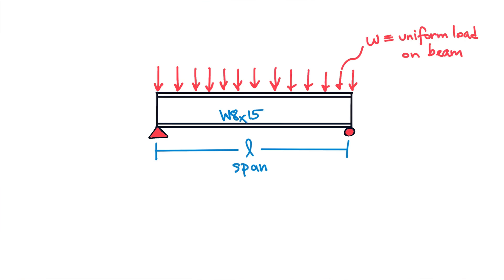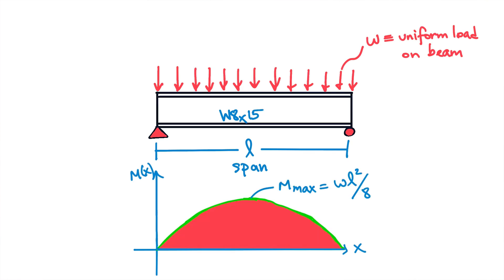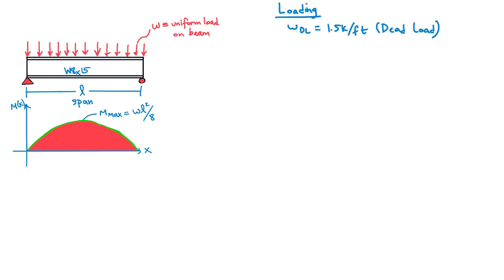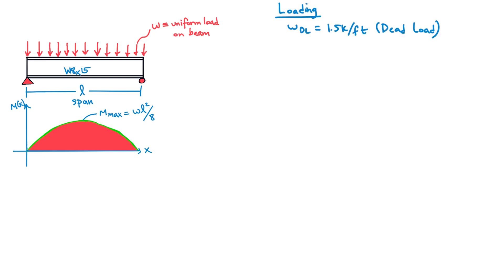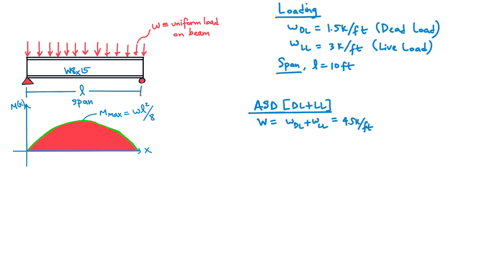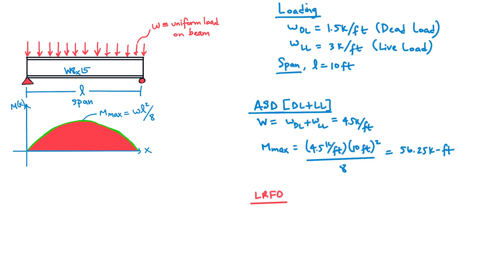Let's put this into perspective. Consider a simply supported steel beam of span L with a uniform distributed load w, which experiences a maximum bending moment of wL²/8. Using numbers: the beam resists a dead load of 1.5 kips per foot and a live load of 3 kips per foot over a span of 10 feet. For ASD, the governing load combination is simply dead load plus live load, giving a total uniform load of 4.5 kips per foot and a maximum service moment of 56.25 kip-feet. Therefore, the required strength under ASD is 56.25 kip-feet.